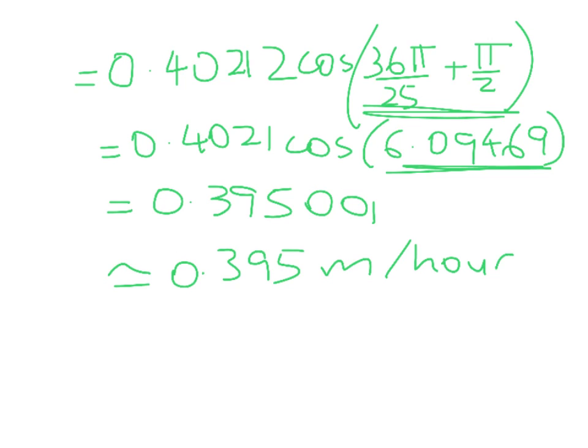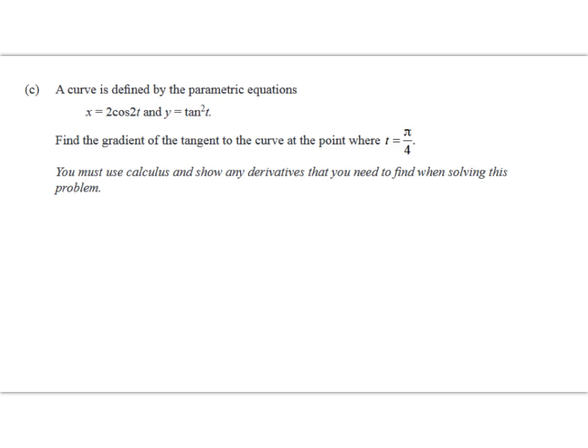On to the last question, which is a nice little parametric differentiation problem. We've got a curve that's been defined by these two parametric equations. So remember, what we've got here is a parameter t, and it's going to affect both my x and y, and that will let me trace out a curve. We're asked to find the gradient of the tangent to the curve where t = π/4.